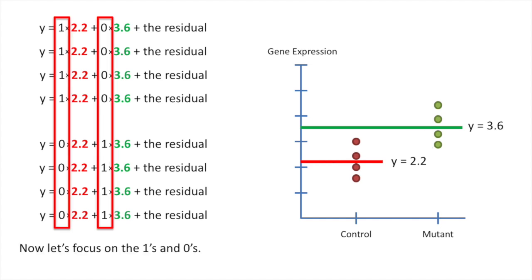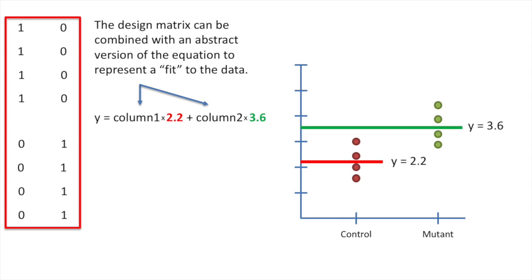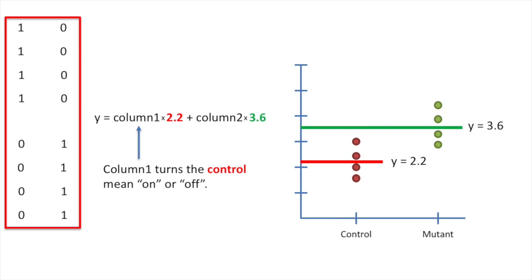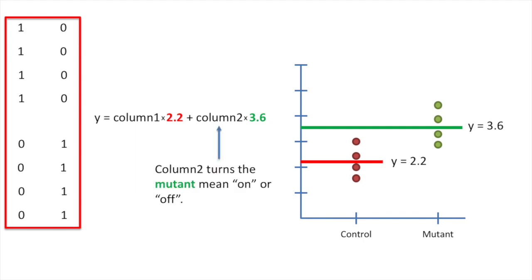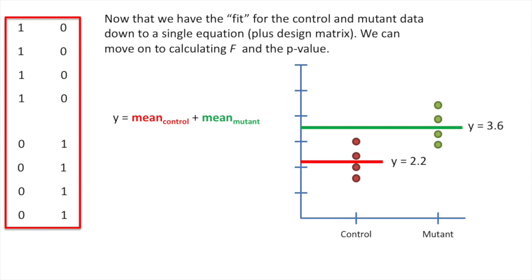Now let's focus on the 1s and 0s — they function like on and off switches for the two means. A 1 turns the mean on, and a 0 turns the mean off. When we isolate the 1s and 0s, they form a matrix called a design matrix. The design matrix can be combined with an abstract version of the equation to represent a fit to the data. Column 1 turns the control mean on or off, and column 2 turns the mutant mean on or off. In practice the role of each column is assumed, and the equation is written as: y equals the mean of the control data plus the mean of the mutant data. Now that we have the fit for the control and mutant data down to a single equation plus design matrix, we can move on to calculating F and the p-value.